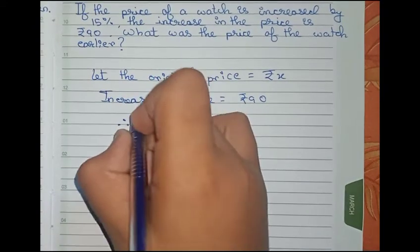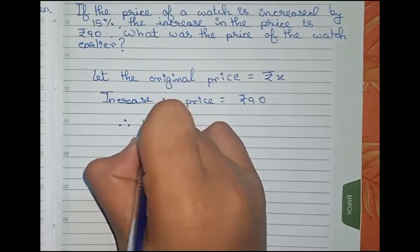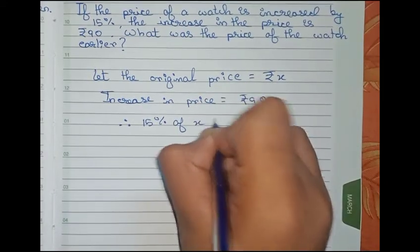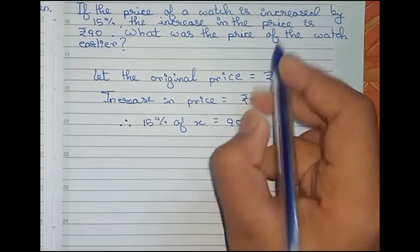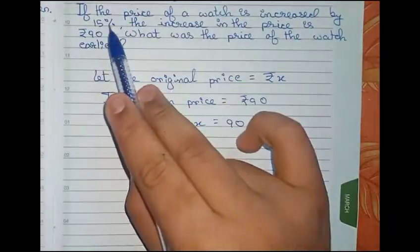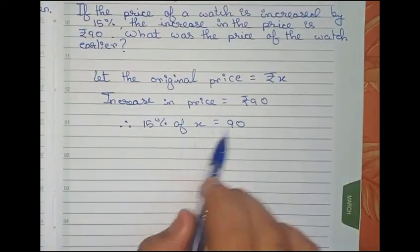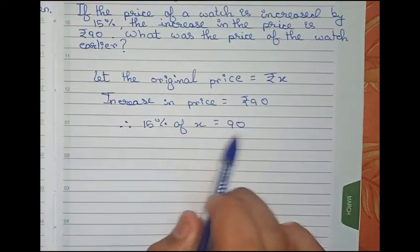So therefore, we can write 15 percent of x equals 90, as it is given in the question that the increase in price is 15 percent. So therefore, 15 percent of x, that is the original price, equals 90.